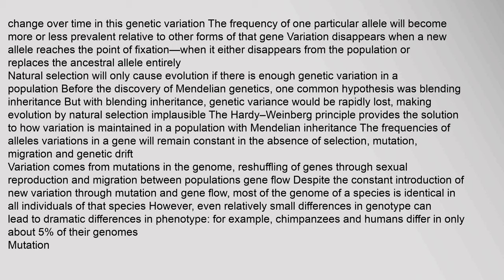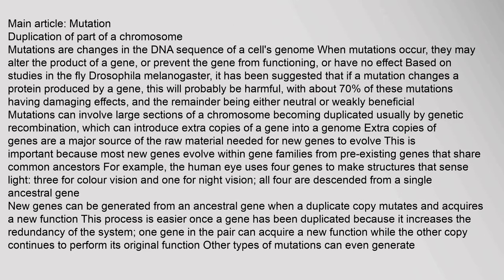Before the discovery of Mendelian genetics, one common hypothesis was blending inheritance, but with blending inheritance genetic variants would be rapidly lost, making evolution by natural selection implausible. The Hardy-Weinberg principle provides the solution to how variation is maintained in a population with Mendelian inheritance: the frequencies of alleles will remain constant in the absence of selection, mutation, migration, and genetic drift. Variation comes from mutations in the genome, reshuffling of genes through sexual reproduction, and migration between populations — gene flow. Despite constant introduction of new variation, most of the genome of a species is identical in all individuals.